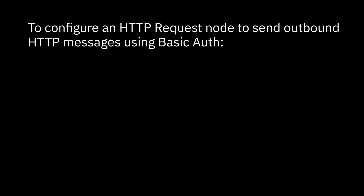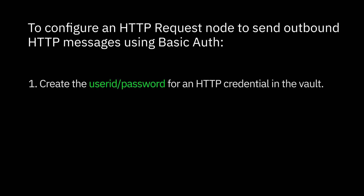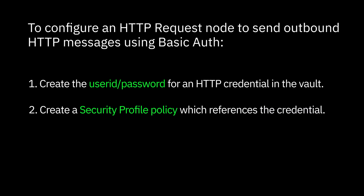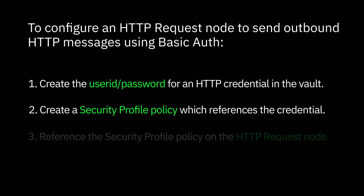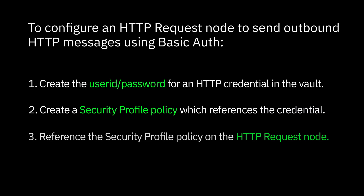In order to configure a flow where an HTTP request node is used to send an outbound message using BASIC-AUTH, there are three things you must do. You must create a user ID and password for the HTTP credential in the vault. You need to create a security profile policy which references the credential. And then you need to reference the security profile policy on the HTTP request node.